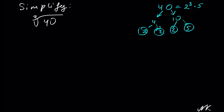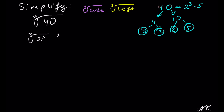Let's break cube root of 40 as cube root of a perfect cube times cube root of whatever is left over — whatever factors were fewer than 3. We rewrite cube root of 40 as cube root of 2 to the third times cube root of 5. This gives us 2 times cube root of 5, so 2∛5 is our solution.